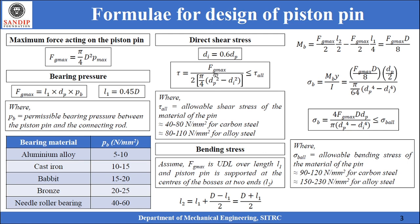Since this is a case of double shear failure, there are two resisting cross-sectional areas, so the formula is: τ = Fg_max / (2 × π/4 × (Dp² − Di²)). It is expected that τ ≤ τ_allowable, where the allowable shear stress is 40–80 N/mm² for carbon steels and 80–110 N/mm² for alloy steels.